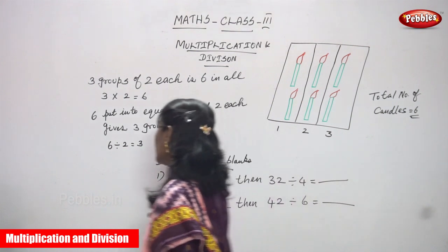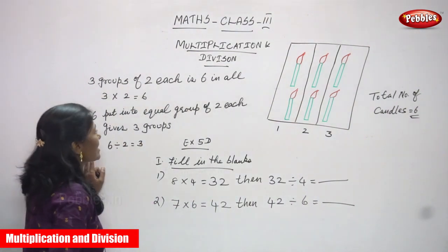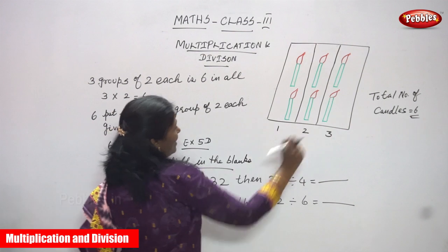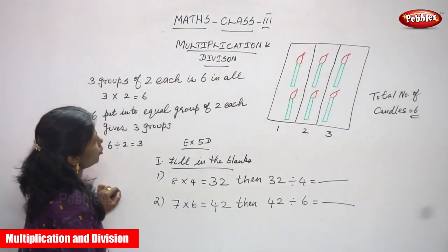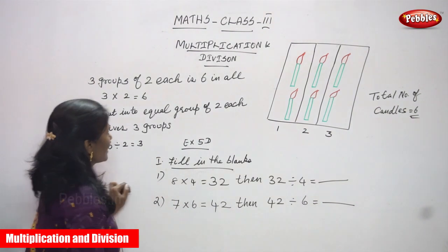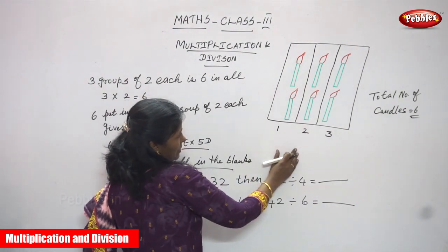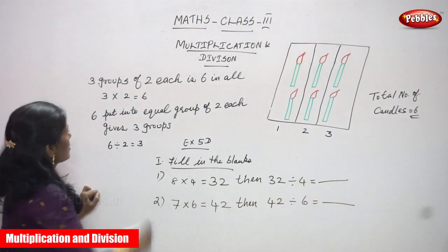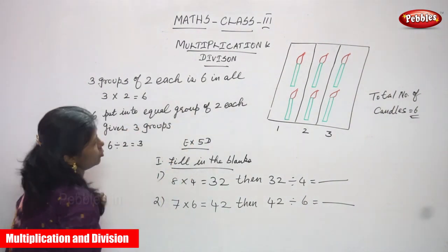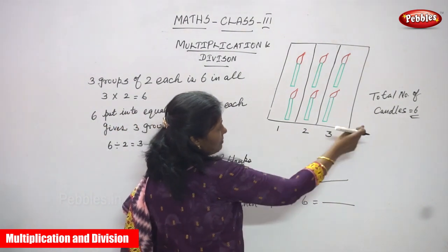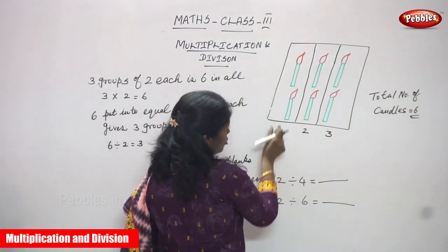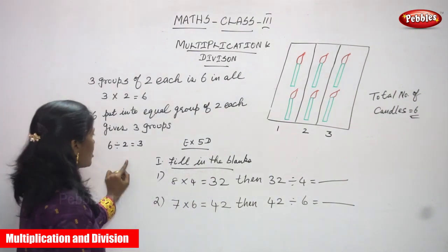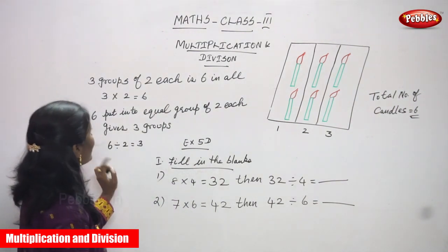Now, six put into equal groups of two each gives three groups. Six candles total — into equal groups of two, how many groups? Three groups. We arrange two candles in each group, and we get three groups. So six divided by two, you can get three groups.